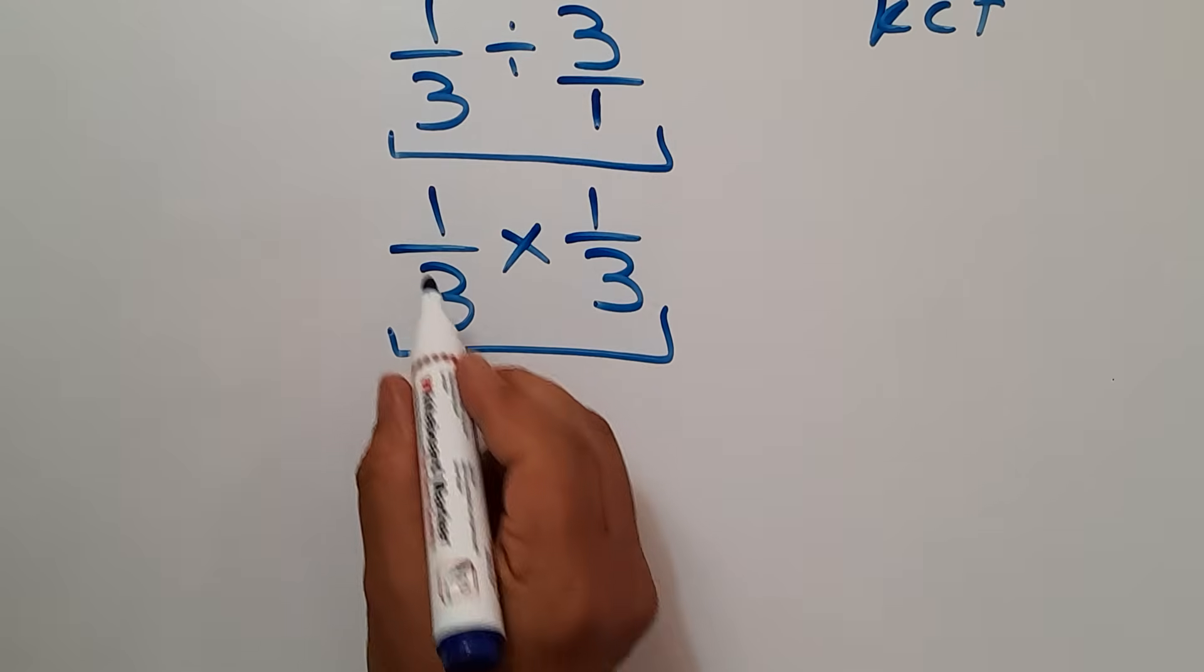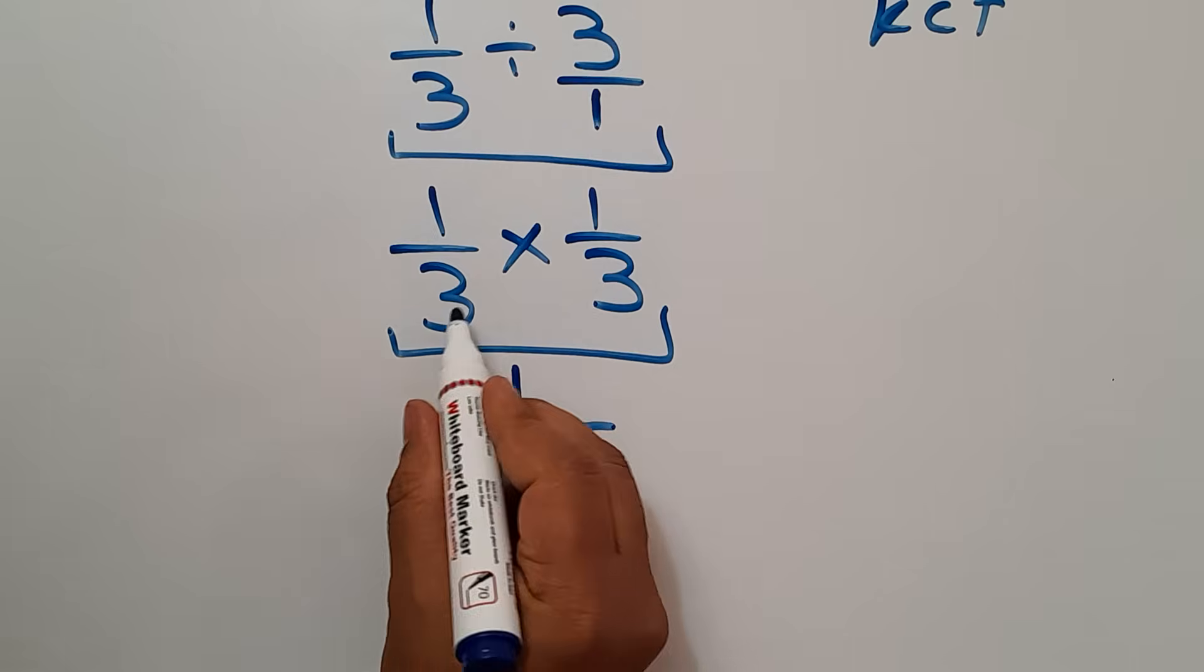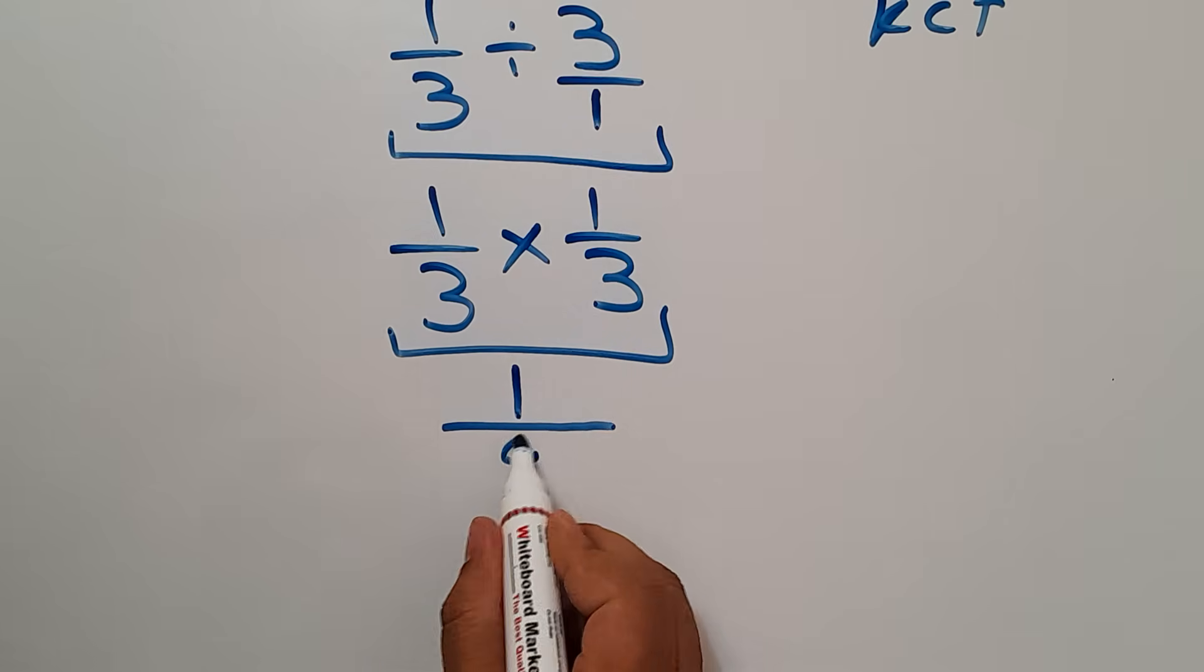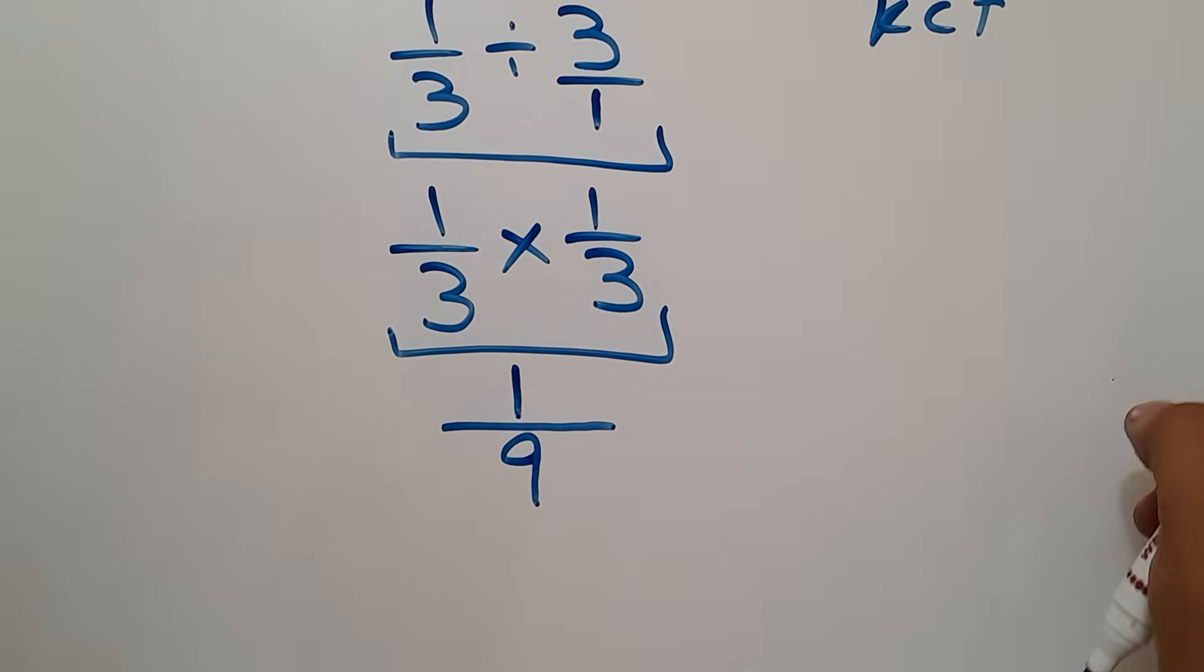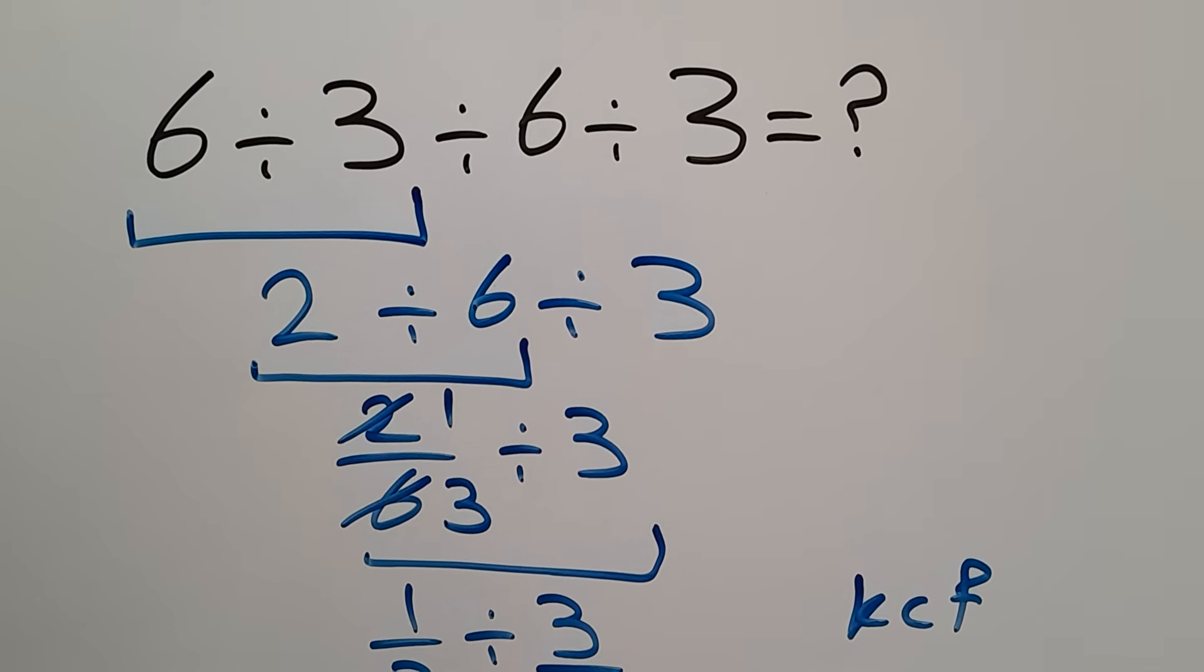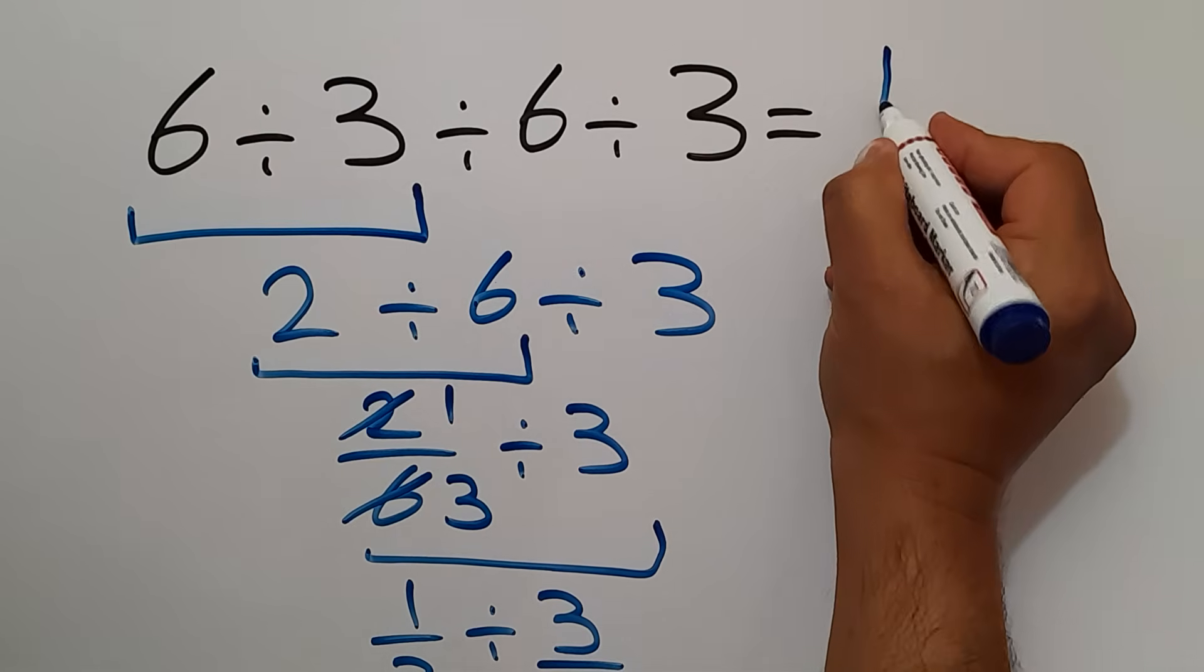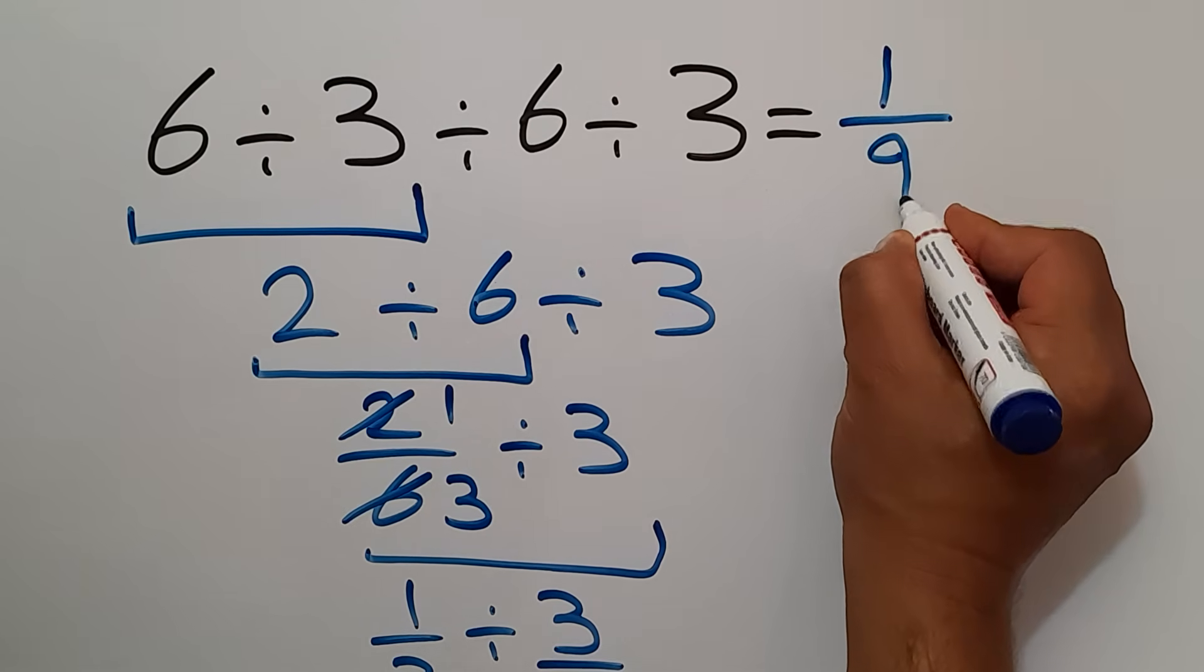1 times 1 gives us 1. So 1 over 3 times 3, which is 9. So therefore, our final answer to this problem is just 1 over 9. The correct answer is 1 over 9.